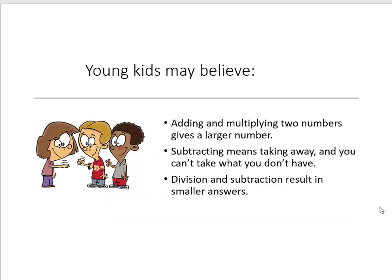The number sense that younger students develop tells them that adding and multiplying two numbers always gives a larger number, or that subtracting means taking away and will always give a smaller number, and also that you obviously can't take away what you don't have. And division obviously always results in an answer that is smaller than what you started with. Now their number sense, as we've already said, is correct when it comes to natural and whole numbers.